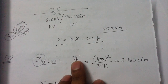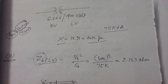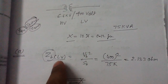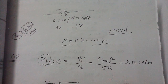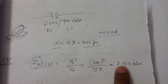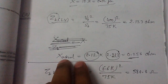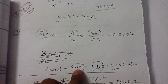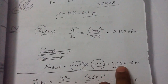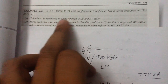The rated values are taken as the base values if nothing else is mentioned in the problem. The rated voltage on the LV side is 400 volts, so we write 400 squared divided by 75 kilovolt-ampere, giving a base impedance of 2.133 ohms. Therefore, the reactance referred to the LV side equals 0.12 × 2.133 = 0.256 ohm.